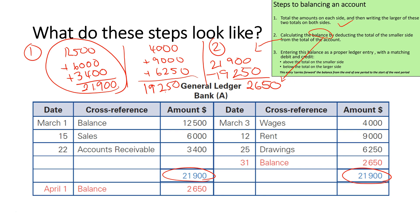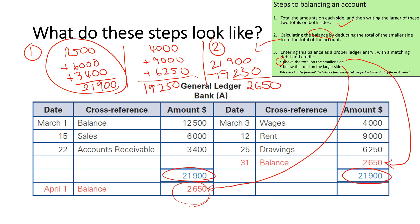Step three says we enter the balance as a proper ledger entry with a matching debit and credit. It's important to note where it goes — you should leave at least one line on either side when you do step one. The amount 2,650 goes above the total on the smaller side and below the total on the larger side. This is because it's telling us that for the start of the next period, there is $2,650 still left in our bank account.